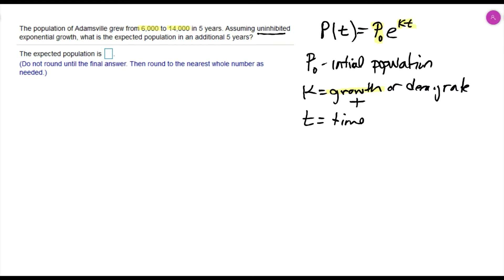Then we have t, which is time. It looks like this problem is dealing with years, so it'll be time in years. And this P(t) is going to be the amount of the population after a certain period of time, the population after time.